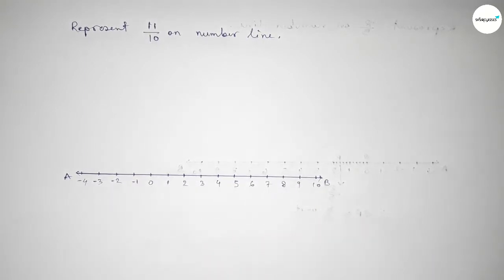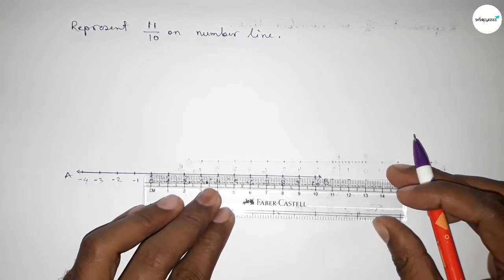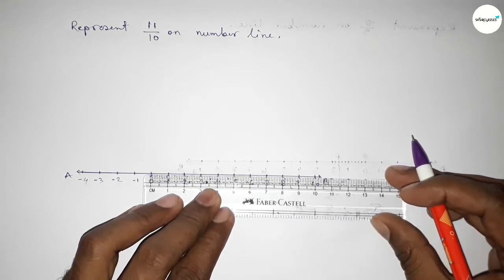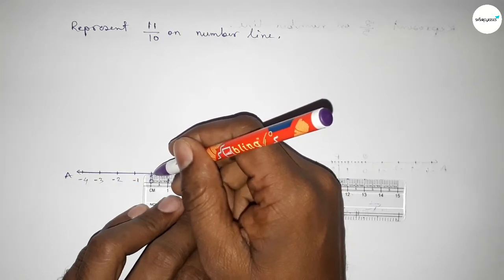Now we have to divide the distance between any two numbers into 10 equal parts, then the length of each part equals 0.1 unit. So first finding the distance between 0 to 1.